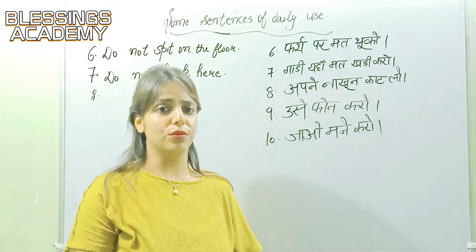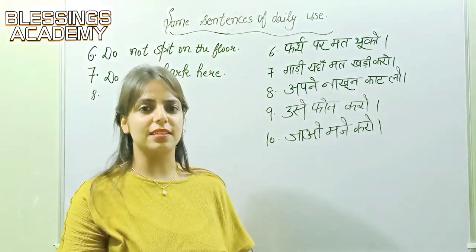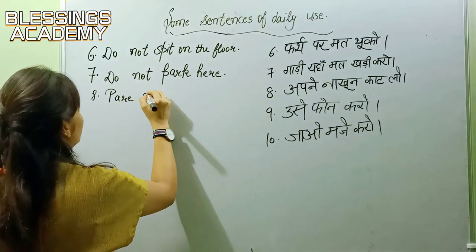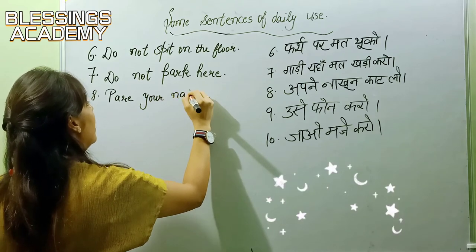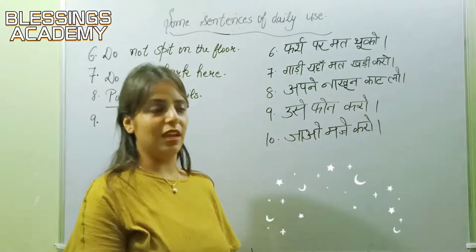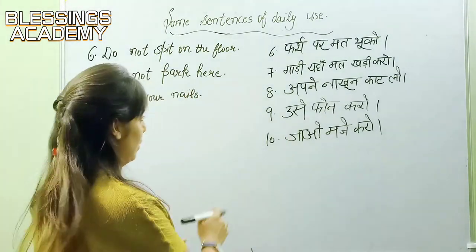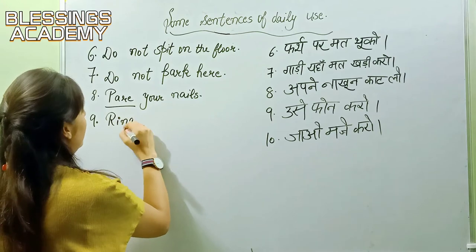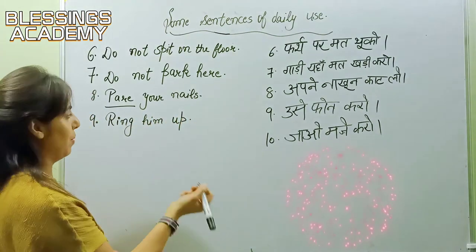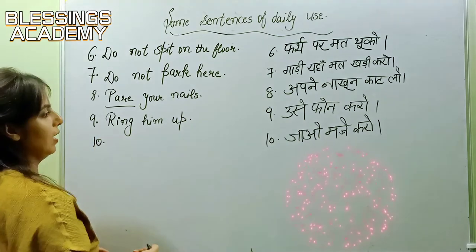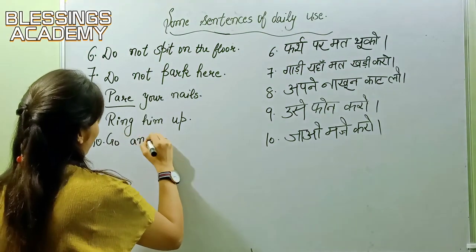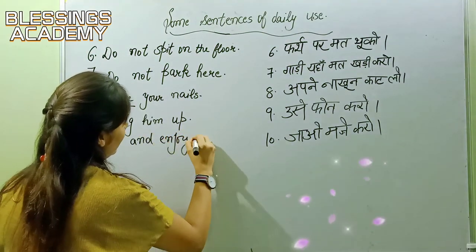The eighth sentence: 'Nakhun kaat lo.' You might think we'll write 'cut nails' — no. We write: 'Pare your nails.' 'Pare' is used for cutting nails. The ninth: 'Usse phone karo' translates to 'Ring him up.' The tenth: 'Jau mazi karo' means 'Go and enjoy.'